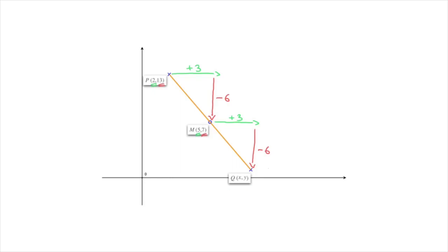Indeed, if we start from the coordinates of point M, which remember were 5 and 7, then to find the coordinates of the endpoint Q, we have to add 3 to the x-coordinate, and take away 6 from the y-coordinate, which corresponds to moving 3 units to the right and downwards by 6 units.